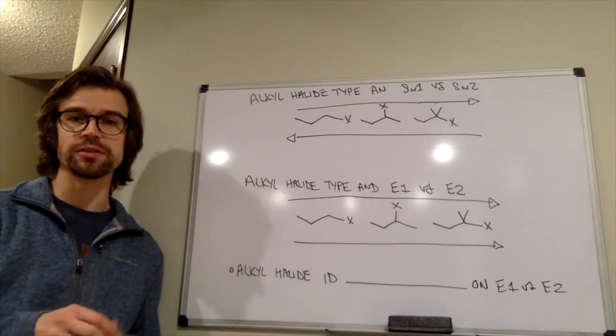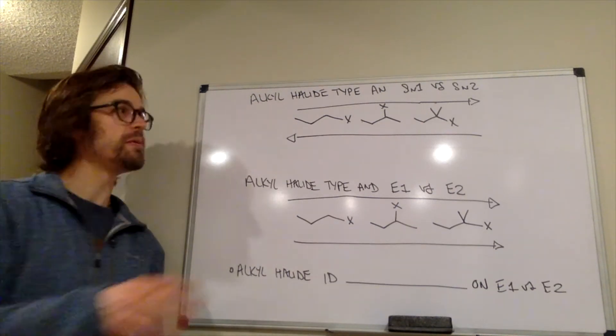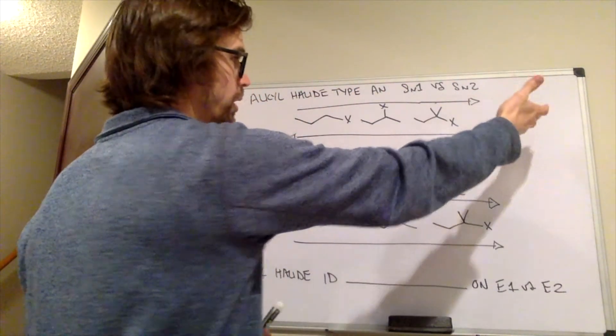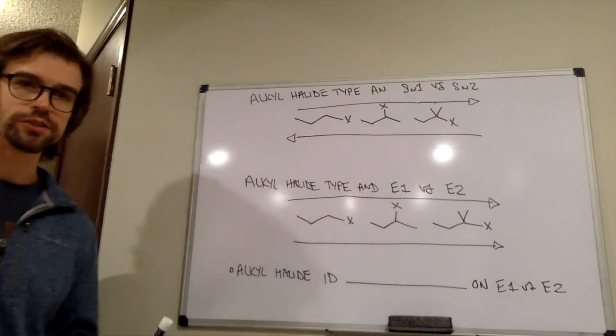So this is thinking back to chapter 7, but maybe write on this side best at SN1 or SN2, and write at this side best at SN1 or SN2, pause it, do that, and then come back.